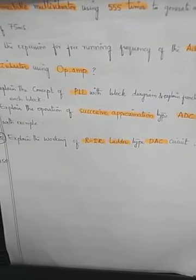The next question is: explain the concept of Phase Locked Loop (PLL) with a block diagram and explain the function of each block. PLL stands for Phase Locked Loop. Explain the block diagram and the function of each block — it includes a VCO (Voltage Controlled Oscillator). Go through the previous videos to find the PLL block diagram.